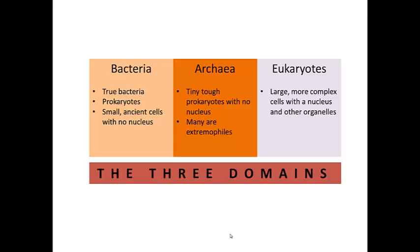Archaea are tiny, tough prokaryotes, again with no nucleus. But many are extremophiles. And what that means is that we find them in very extreme conditions, like the steam vents under the ocean, or the salt marsh in the San Francisco Bay.